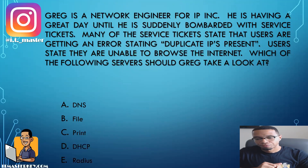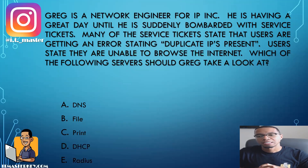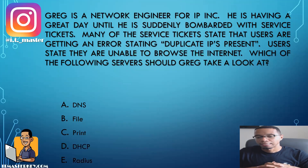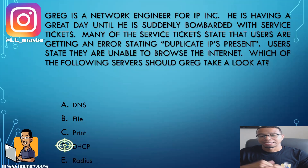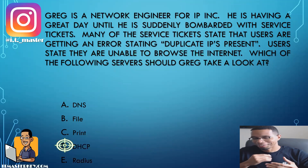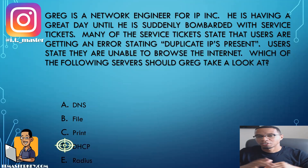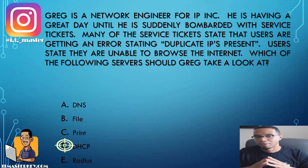Greg is a network engineer for IP Inc. He is having a great day until he's suddenly bombarded with service tickets. Many tickets state that users are getting an error saying duplicate IPs are present, and users are unable to browse the internet. Which server should Greg take a look at? The DHCP server — it's responsible for automatically assigning IP addresses. If there's an issue, that's the first place to look, because nobody should be getting the same IP address.